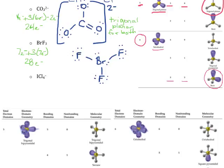Let's check the octets. Each fluorine has 6 non-bonding and 2 bonding electrons, giving it 8 — all fluorines have complete octets. Now checking bromine: it has 4 non-bonding electrons and 6 bonding electrons, meaning bromine feels like it has 10 electrons around it, exceeding its octet. Not all atoms can exceed their octet, but we check: bromine is in the fourth period, so it can use its third energy level d orbitals. Bromine can exceed its octet — this structure is fine.